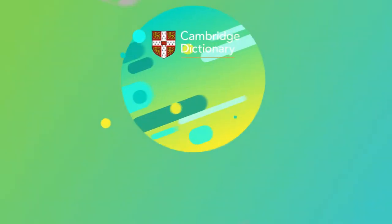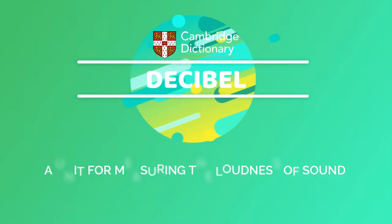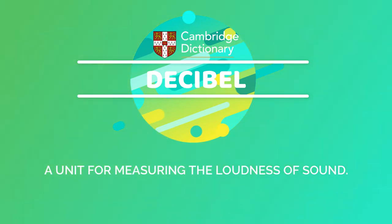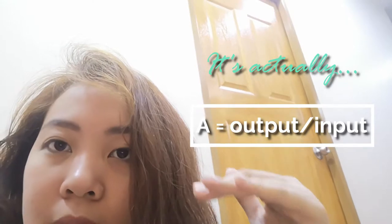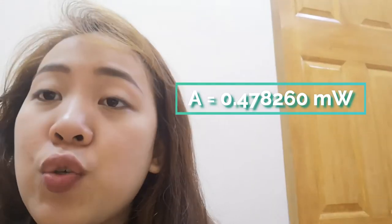What is a decibel? A decibel is a unit for measuring the loudness of sound. The formula for decibels is 10 log(A), where A is output over input. Our A here is 0.478260.